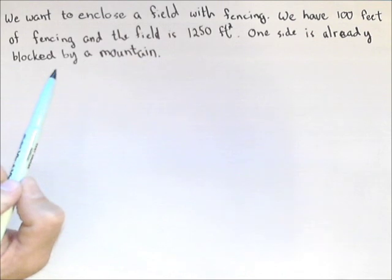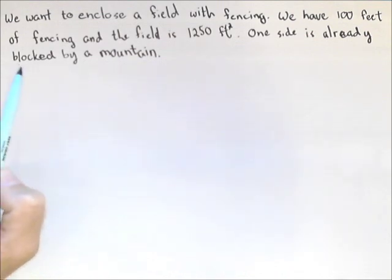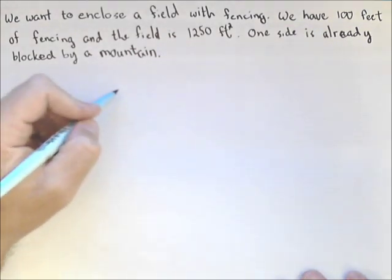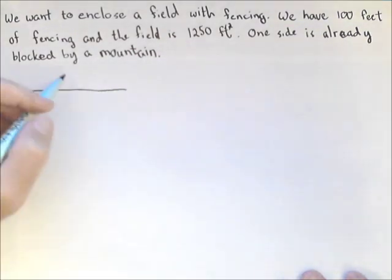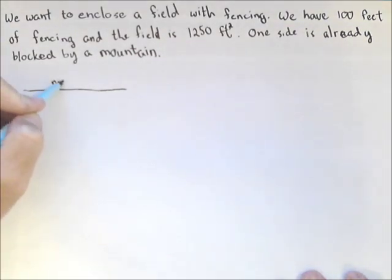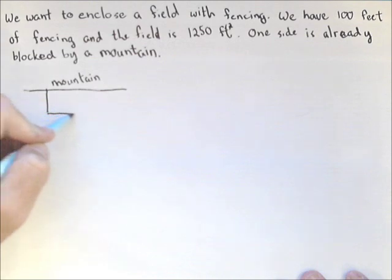Now, the question is, what do the other three sides need to be in order to enclose this field? So, let's draw a picture of what's going on and label some variables. So, here's our mountain, and it's going to be a rectangular field.